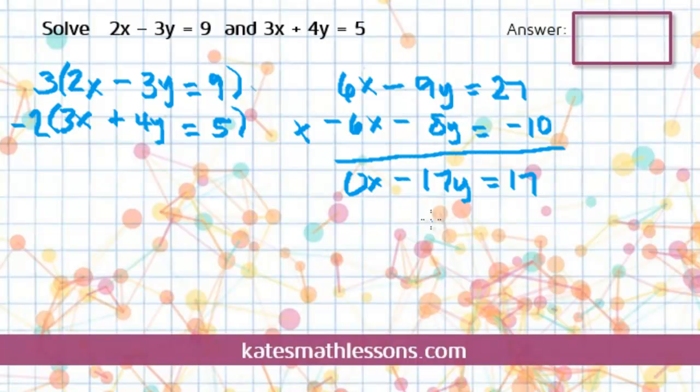So we can get rid of this 0x here. We just have negative 17y equals 17. I can divide both sides by negative 17. That tells me that my y value is negative 1.